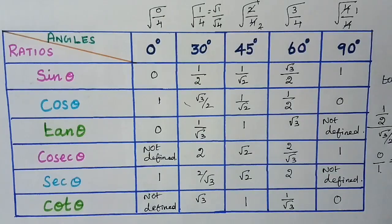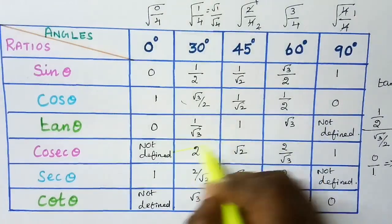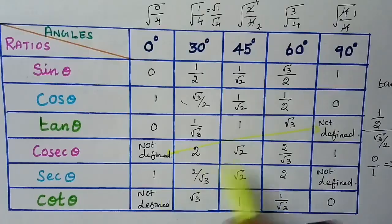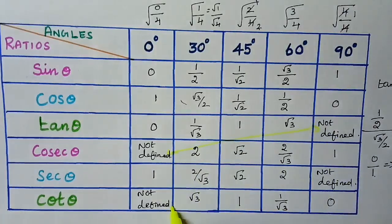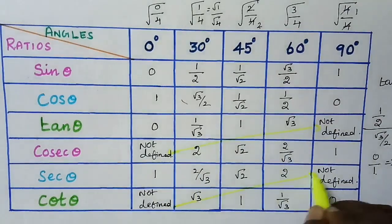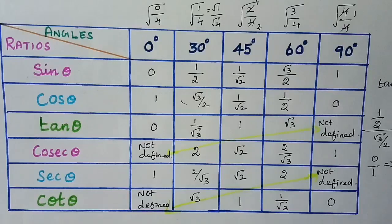Now we have got all the values of the trigonometric table. Here the not defined values appear alternately end to end. Don't forget to subscribe to our channel and share this video with your friends. Thank you.